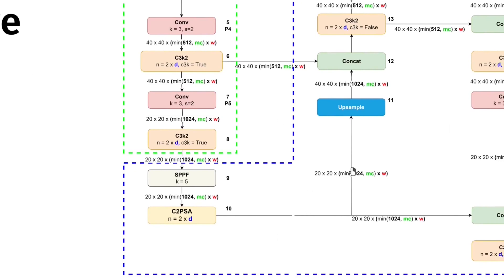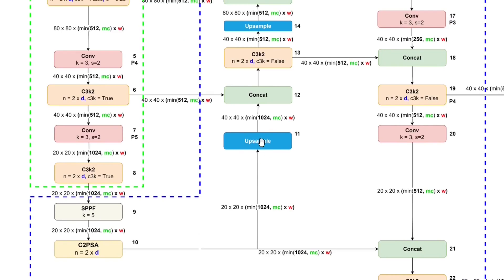Now the neck explanation. First, SPPF — Spatial Pyramid Pooling Fast — is used after the last convolution layer in the backbone. Its main function is to generate a fixed feature representation of objects of various sizes in an image without resizing the image or introducing spatial information loss. After that, there is C2PSA, or Cross-Stage Partial with Position-Sensitive Attention. This new YOLO 11 block helps the model learn global relationships between pixels or features at different positions, enhancing better spatial representation. Next is the upsample layer, used to increase the feature map resolution. YOLO 11 uses the nearest neighbor upsampling method, which works by repeating values of nearby pixels to fill newly generated pixels. This layer increases the C2PSA feature map resolution to match the feature map resolution of the corresponding C3K2 block.